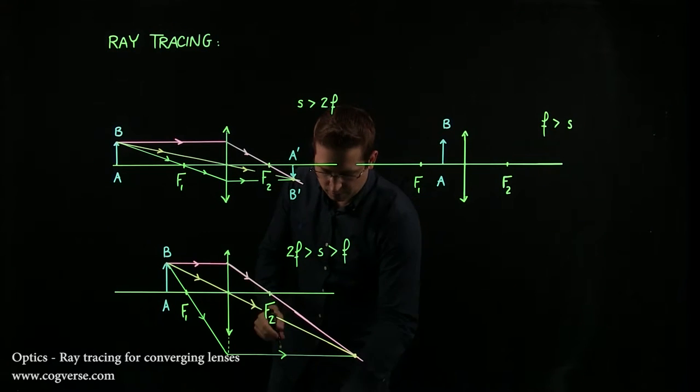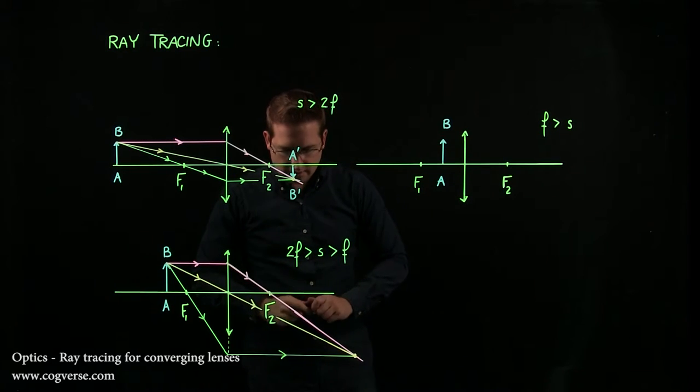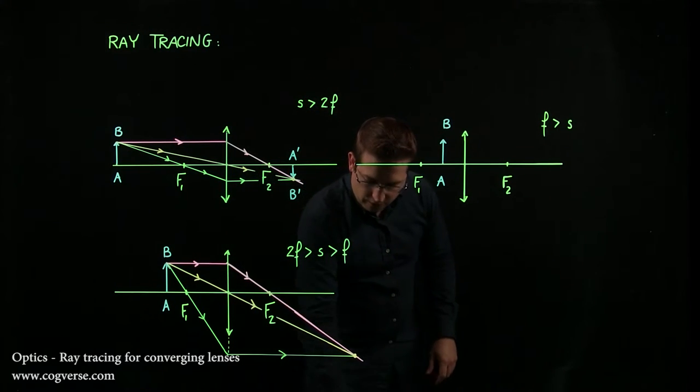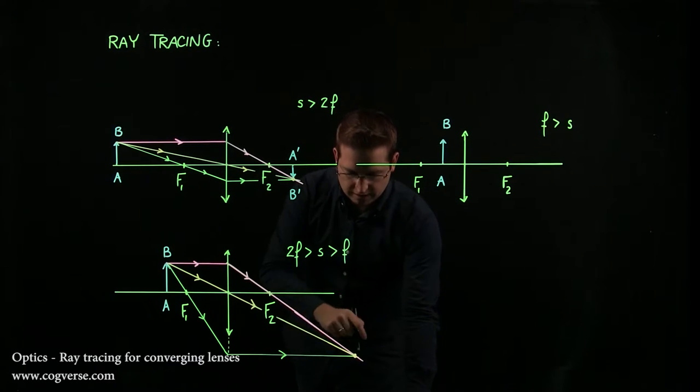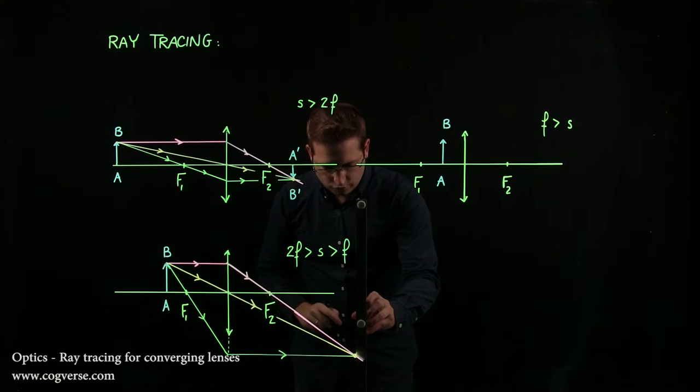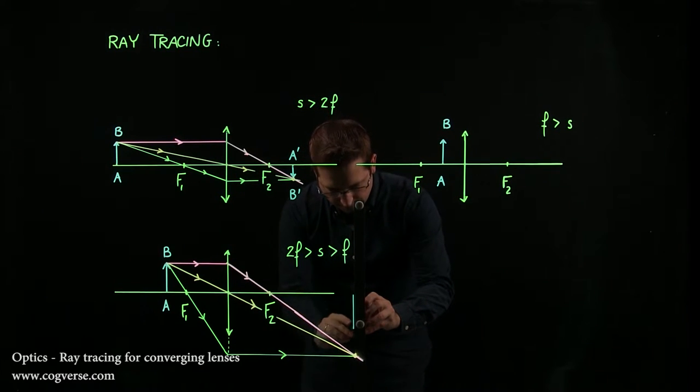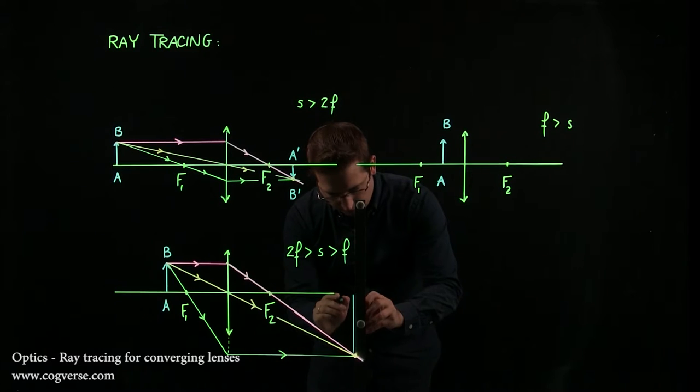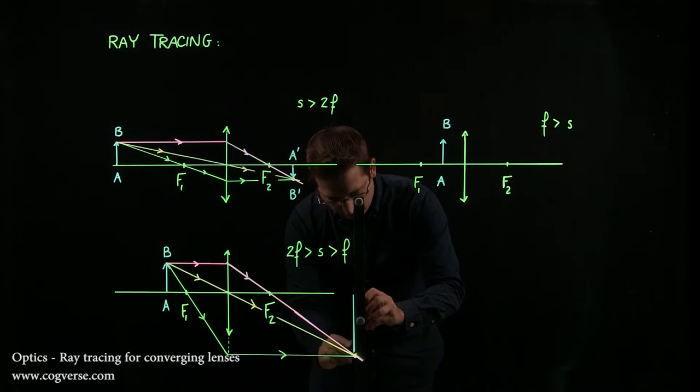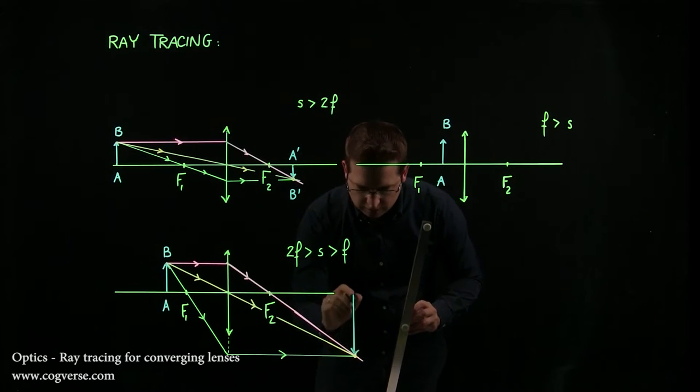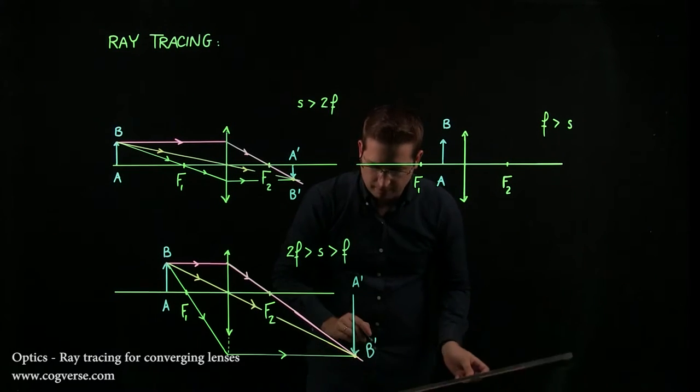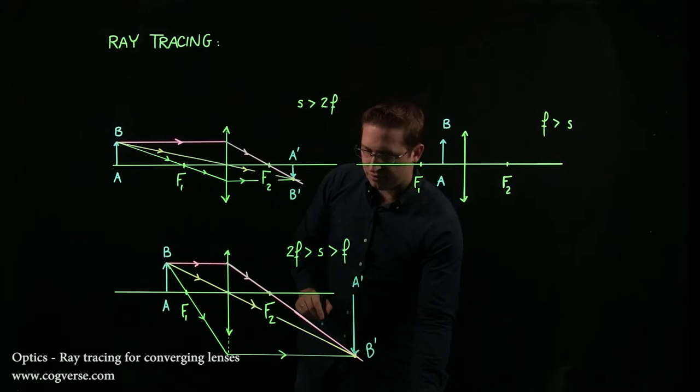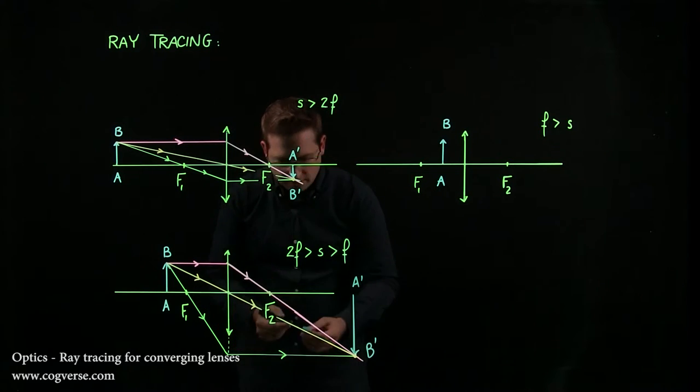And this time your image is inverted, but it's enlarged and it's still real because light actually converges at this point. And you could draw A prime, B prime, just like this. This would be A prime, B prime. And you have an enlarged, inverted real image.